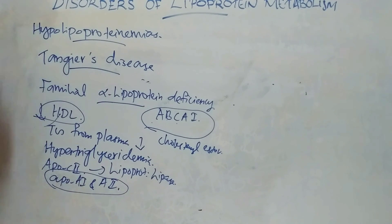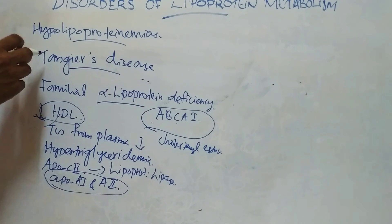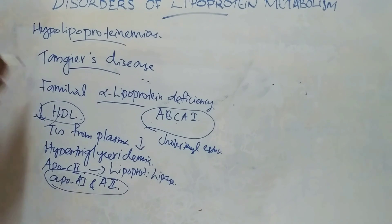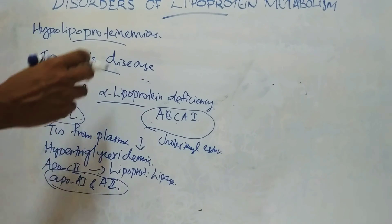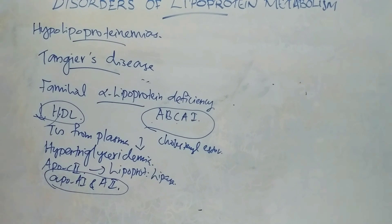That is hypolipoproteinemias — two types: abetalipoproteinemia and familial alpha-lipoprotein deficiency or Tangier's disease. That is about disorders of lipoprotein metabolism, today's topic. Thank you for watching.